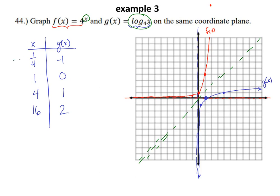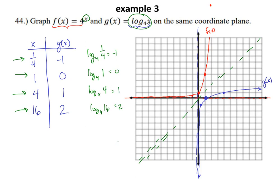I strongly encourage you to think through the process rather than just using a calculator. When graphing a logarithm, think: what is the perfect exponent? If I'm graphing log base 4, I'll choose one-fourth, one, four, and sixteen as inputs because those give clean outputs. That understanding of how the base and argument play together really makes a difference. I hope we get some practice on this assignment.